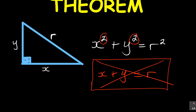We need to square the sides. So if they ask you to explain or define the Pythagoras theorem, you say: the sum of the squares of the smaller sides of a right-angled triangle — sum meaning plus — is equal to the square of the longest side. This is the Pythagoras theorem.